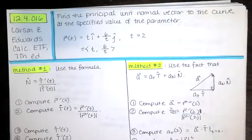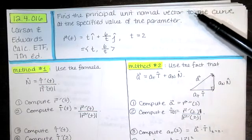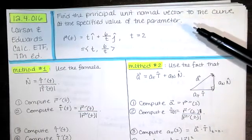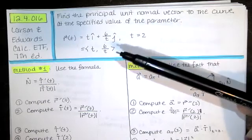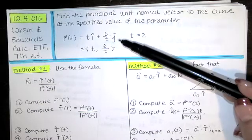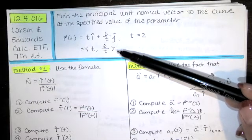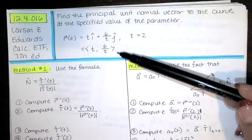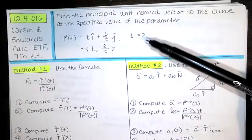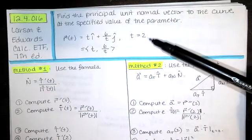In this video, we solve problem 12.4.016 from the Larson and Edwards Calculus Early Transcendental Functions text, 7th edition. We're asked to find the principal unit normal vector to the curve at the specified value of the parameter. Our curve is given by r(t) = t·î + (6/t)·ĵ, written in component form. We want the principal unit normal vector at t = 2.